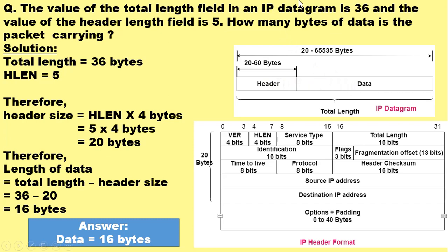And here we are given the total length as 36 bytes, and we are also given the HLEN field value as 5.